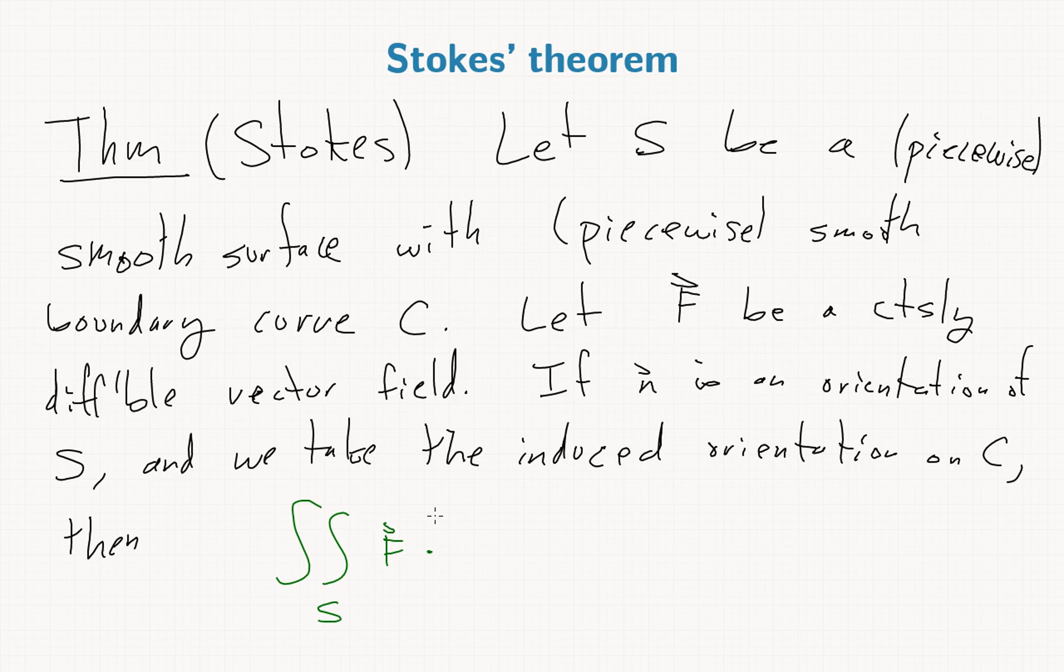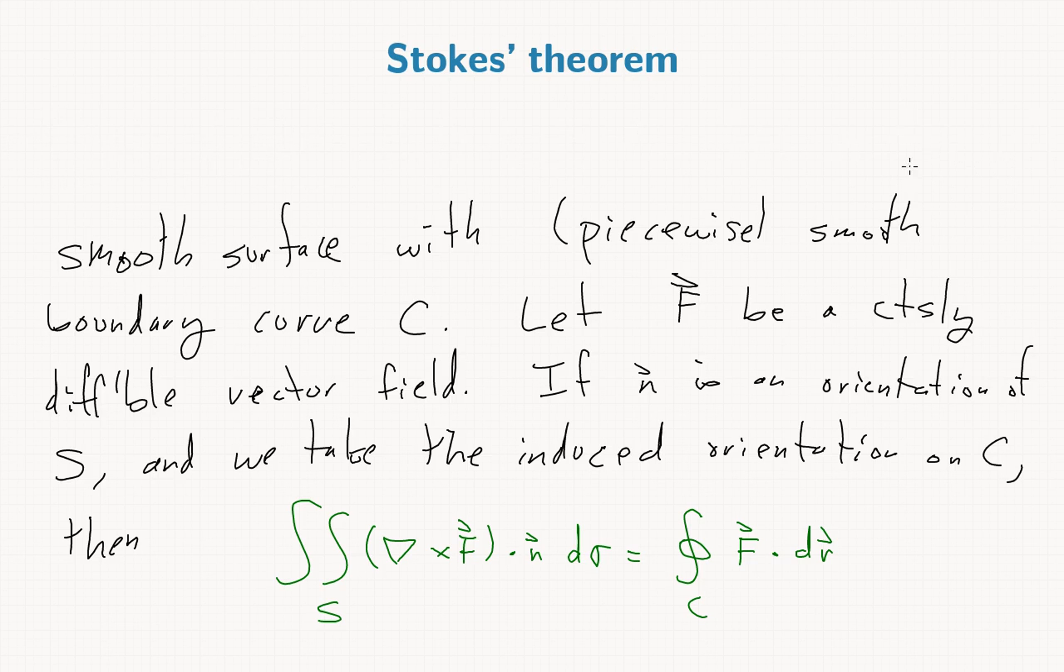curl of F dot n d sigma. So here's where we need that orientation, is equal to the line integral over C, again with the induced orientation, F dot dr. Let me leave the equation up and get rid of all the hypotheses in front of it.